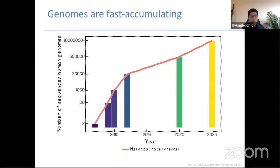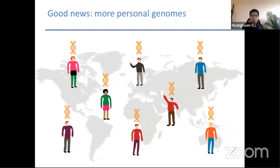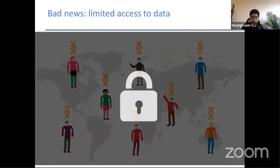Let me first start with the genetics example. Many of you have probably seen a figure like this before: it shows that the number of sequenced human genomes has been increasing at an exponential rate over the past couple of decades. We're now at around 500,000 genomes, and this is projected to reach more than 10 million genomes in the next few years. This is great news — we now have a lot of genetic sequences that we could leverage to gain a better understanding of human genetics.